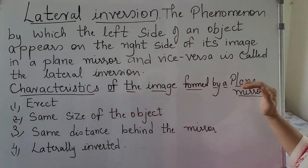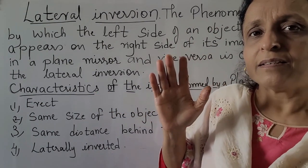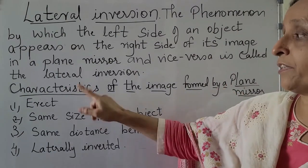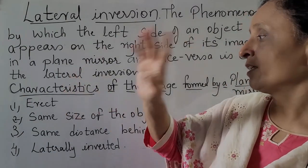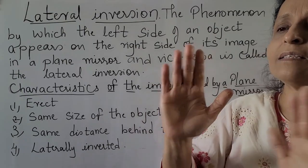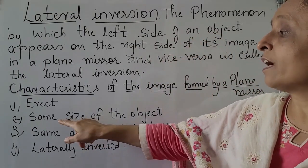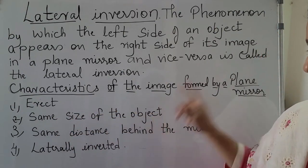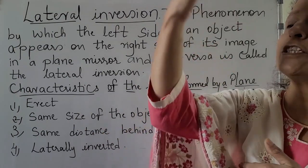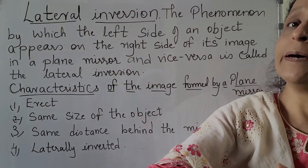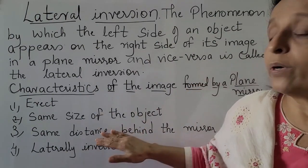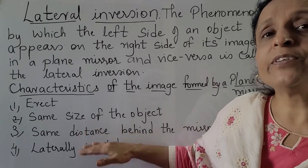What are the characteristics of the image formed by a plane mirror? It is erect — your head is seen as head, leg as leg. The image which is formed is an erect image. It is the same size — whatever your height or breadth, it is seen as the same size. The image is formed at the same distance behind the mirror — whatever your distance from the mirror, the image is formed at that same distance. And the image is laterally inverted — the sides are inverted.